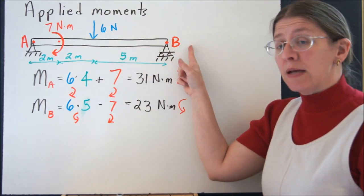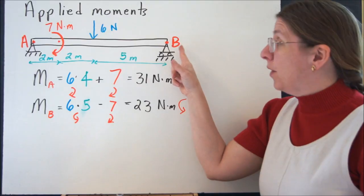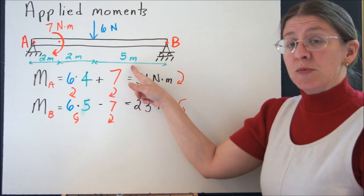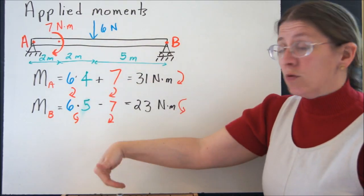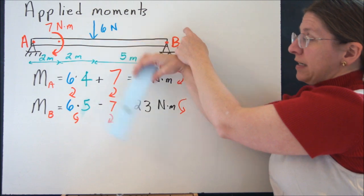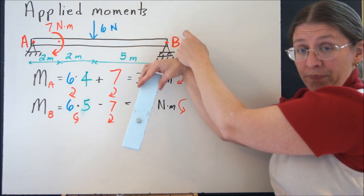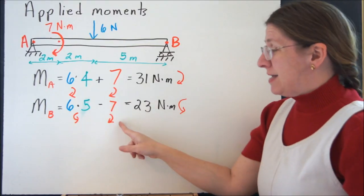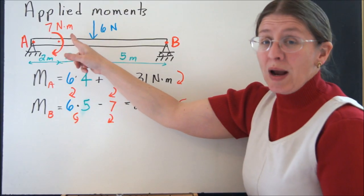Now if I want to take the sum of the moments at B, if I want to add up what these two things are doing at B, this 6N is now going to be times 5, and in fact will be turning in the other direction. If I put my finger here, a 6N load spins that down, or rather spins B counterclockwise.